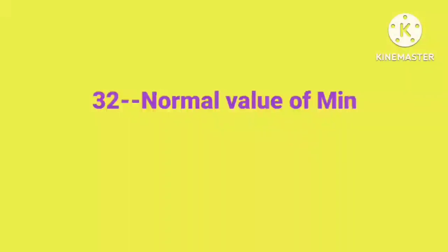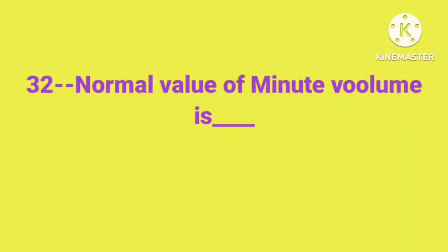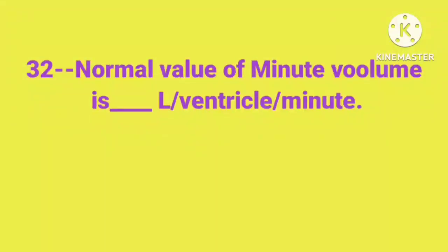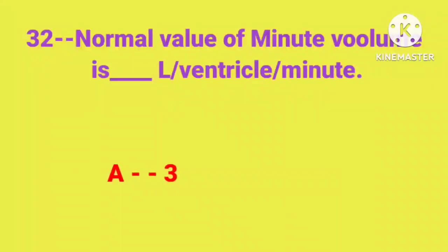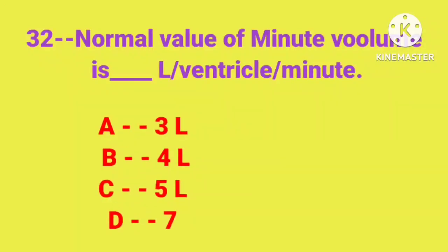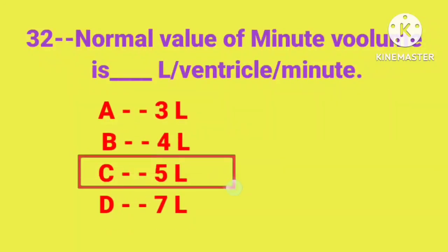Question number 32: Normal value of minute volume is dash liters per ventricle per minute. Option A: 3 liters, B: 4, C: 5, D: 7. Correct answer is Option C: 5 liters.